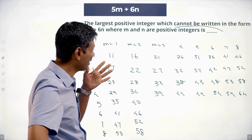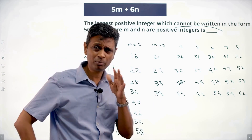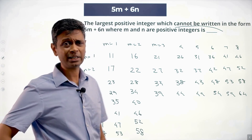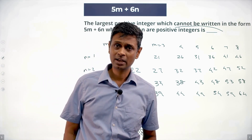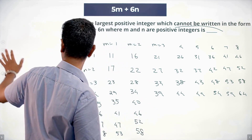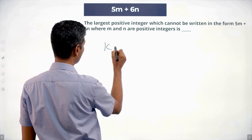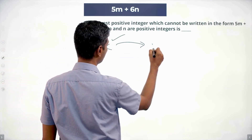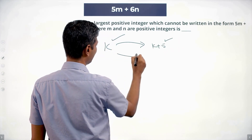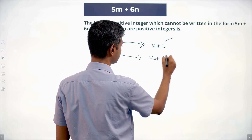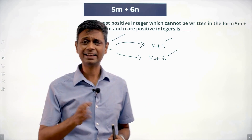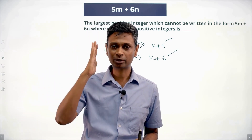I'm already getting a pattern. The key insight: if I have a number k that can be written, then I can also get k plus 5 and k plus 6. So any writable number generates infinitely many more writable numbers.